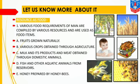Various crops obtained through agriculture are grown and are useful to satisfy our needs. Milk and its products and meat are obtained through domestic animals — milk is useful for both non-vegetarian and vegetarian persons, while meat satisfies the need of non-vegetarian persons. Fish and other aquatic animals from reservoirs satisfy the food need of non-vegetarian persons but not vegetarians. Honey prepared by honeybees is also useful to us and is termed a resource.